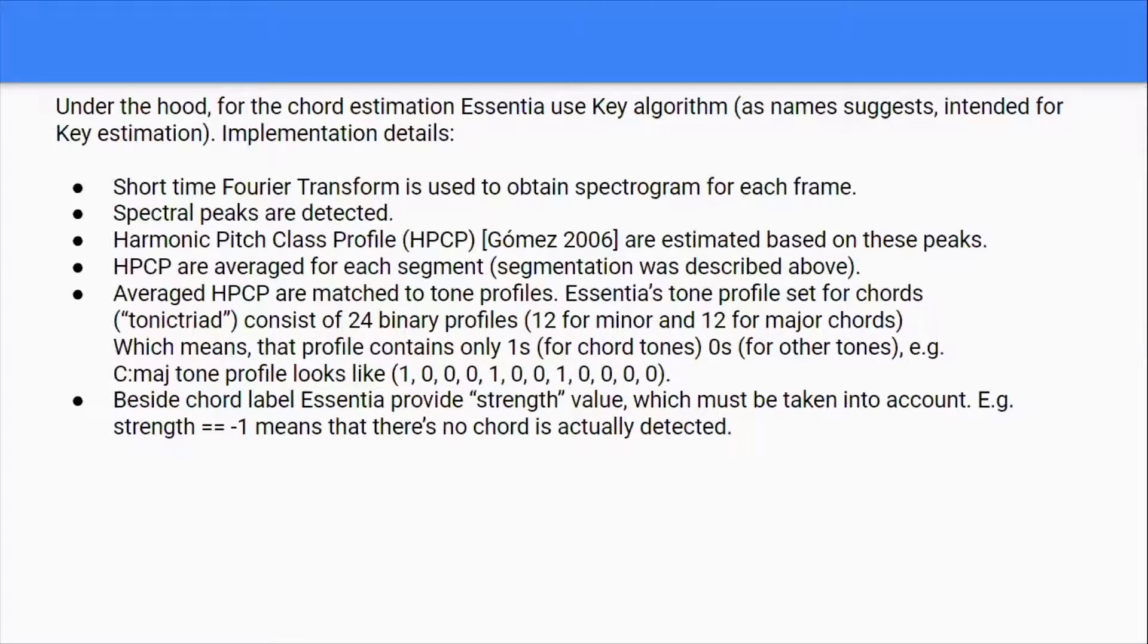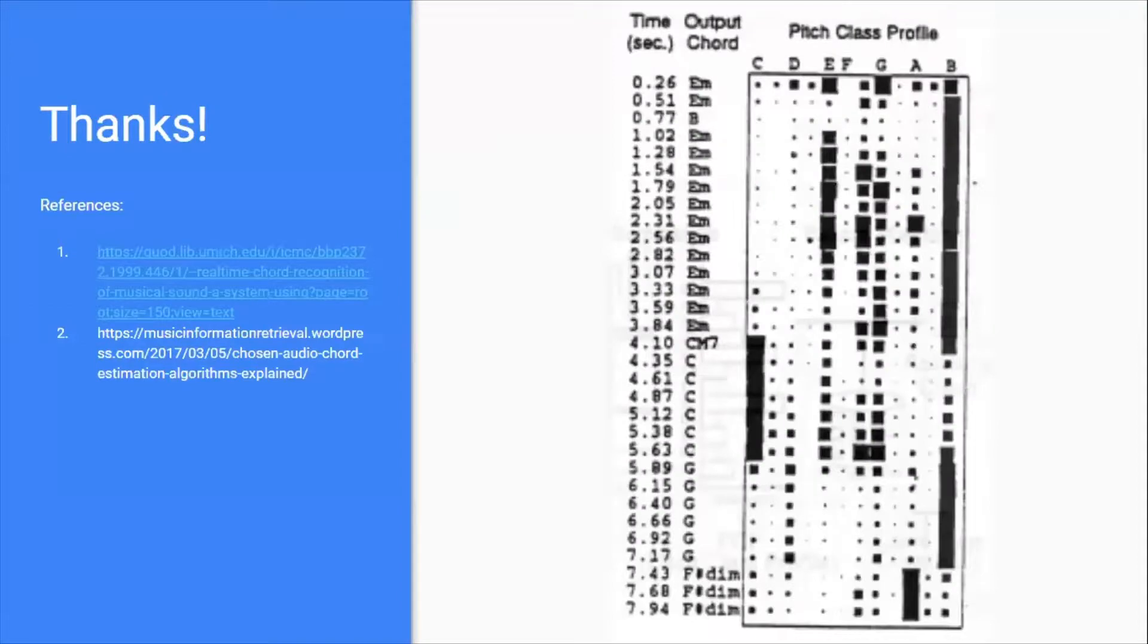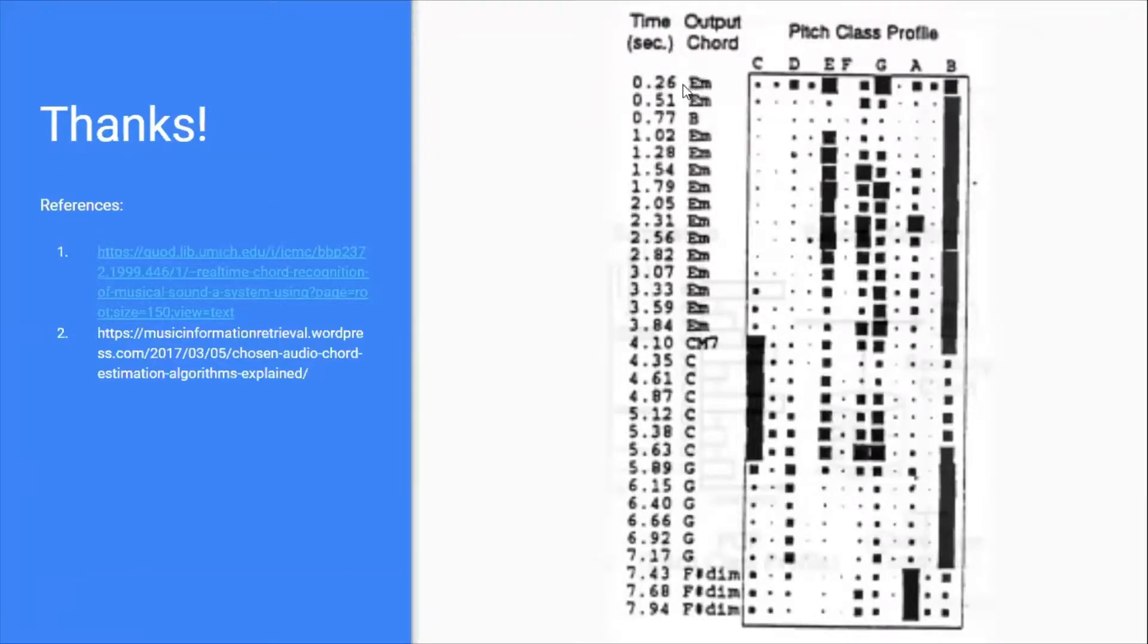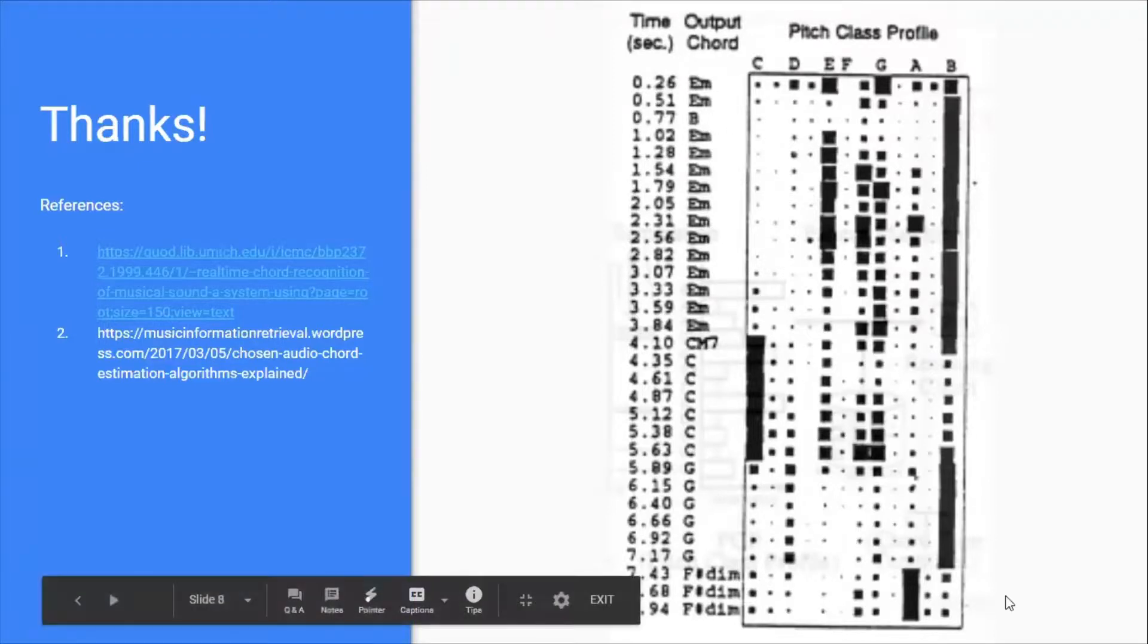Similar to Madmom, there are 24 profiles like 12 major and 12 minor. It doesn't give a zero condition, but I have an option to set a strength value. If the strength value of a particular chord is less than 80 or 85 percent, I can make the chord as no chord detected. This is the basic logic for the no chord state. In the figure here you see a pitch class profile for different chords. It's basically an audio signal which was passed, and at 26 seconds it was E minor, then 51 E minor, 77 B, like that.